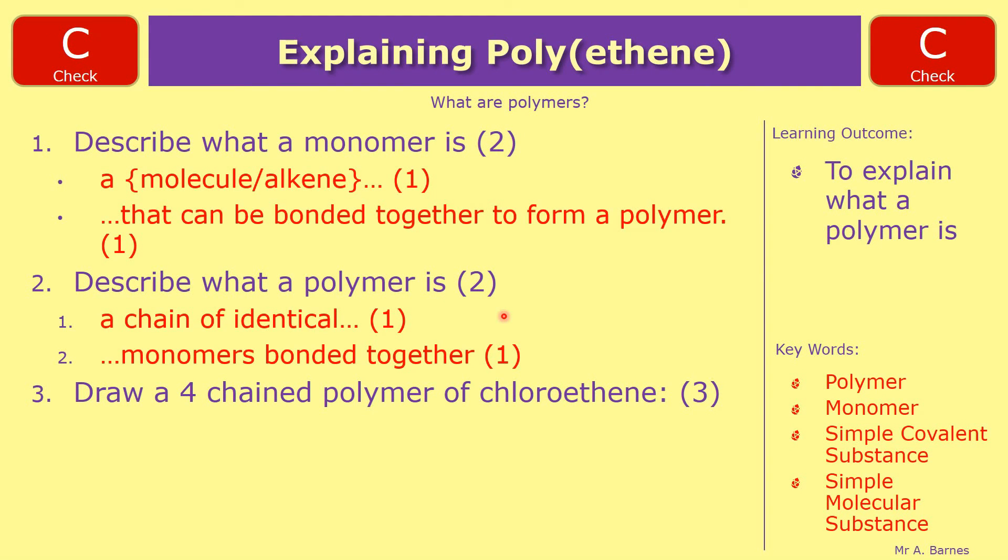Then the third one draw a four chained polymer of chloroethene. The first thing you do is you take your alkene, you break the double bond so it looks like that. The second thing you want to do is take that unit there and repeat it. So there's one repeat which will get you one mark.